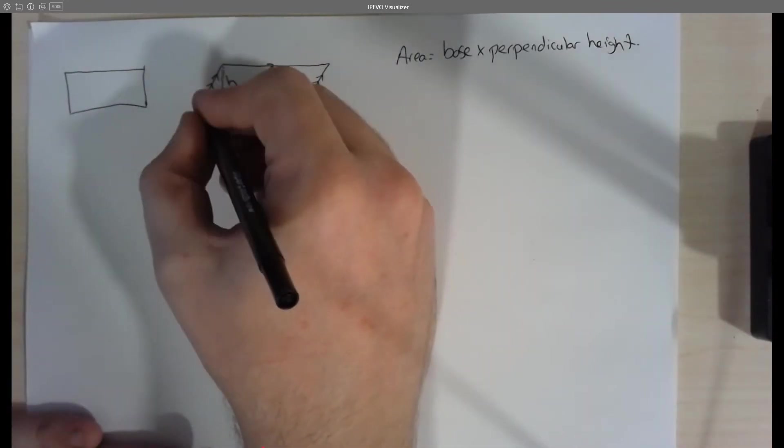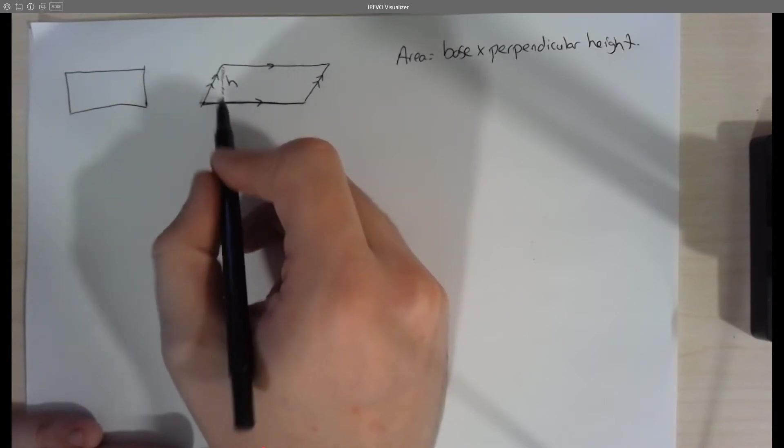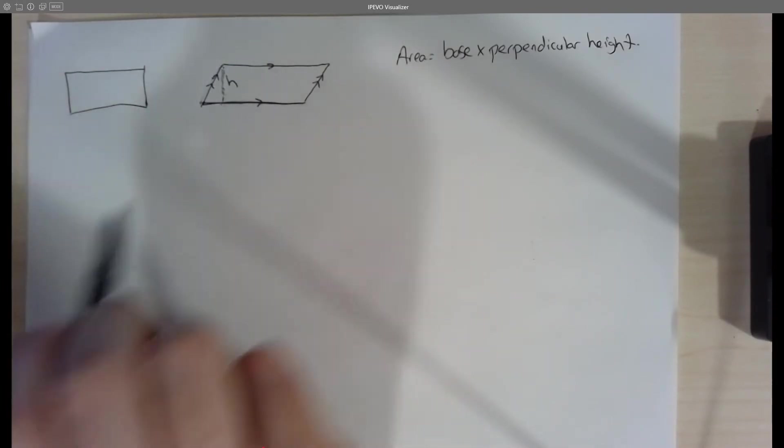So it's not this length. It's not this length here, the side length. It's going to be the height between the two parallel lines.